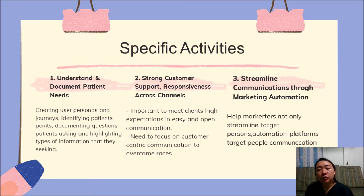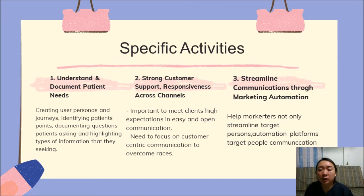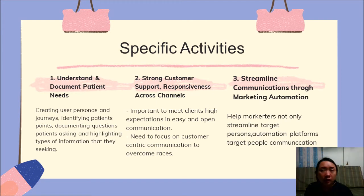The second activity is strong customer support and responsiveness across channels. It is important to meet clients' high expectations through easy and open communication, and to focus on customer-centric communication. The third activity is streamlined communication through marketing automation, which helps marketers target the right people — for example, through social media pages.